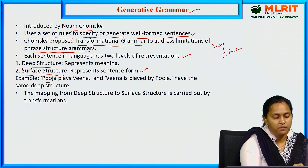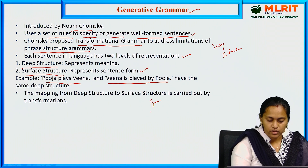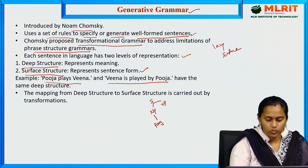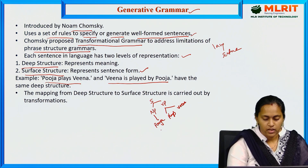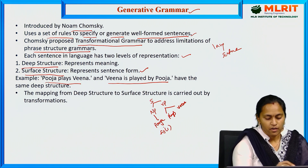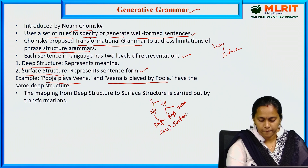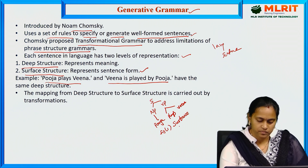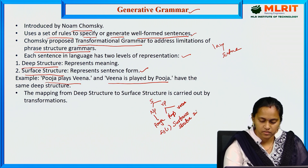Take two examples: 'Pooja plays Veena' and 'Veena is played by Pooja.' In the first sentence, the noun phrase contains 'Pooja,' the verb is 'plays,' and 'Veena' is the noun phrase. This represents the surface structure of sentence one.